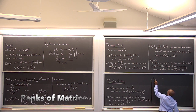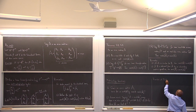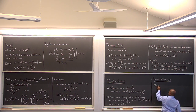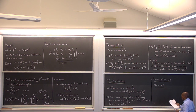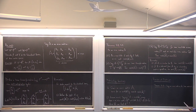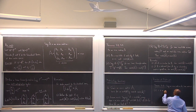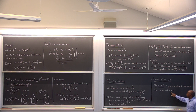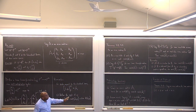So today I want to focus on how to compute rank. This is our first big theorem of the day — theorem 3.6 from the book. Let's say an m by n matrix A has rank r. What do we know about r? First, r is not too big: r cannot be more than the number of rows m, and r cannot be more than the number of columns n.